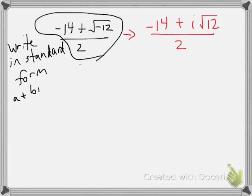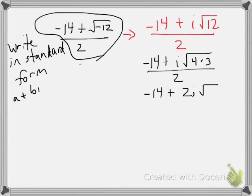Now I want to ask myself, can I simplify the square root of 12? Well, I'm thinking about factors as if I'm going to do a factor tree, and I know that 12 is 4 times 3. And does the square root of 4 mean anything to me? Absolutely it does. It's the number 2. And so I can write 2i the square root of 3.